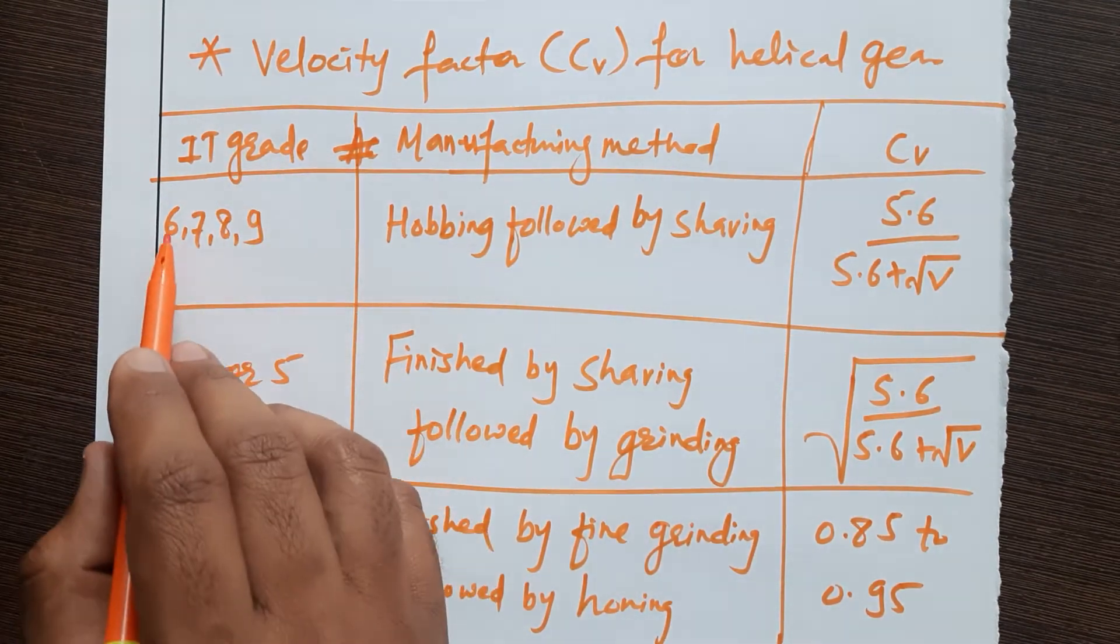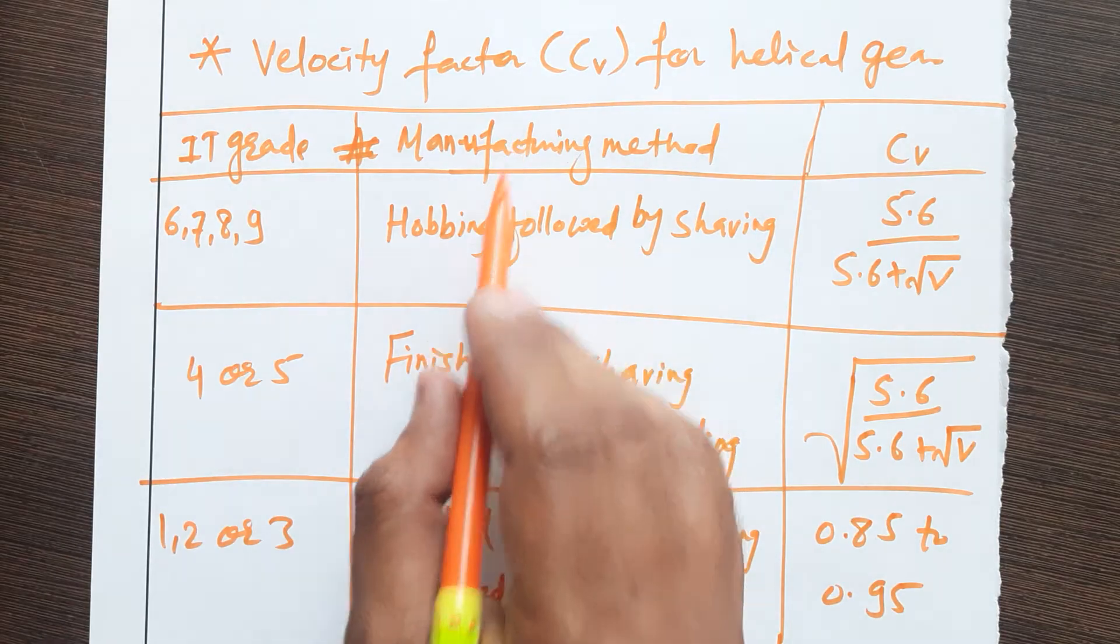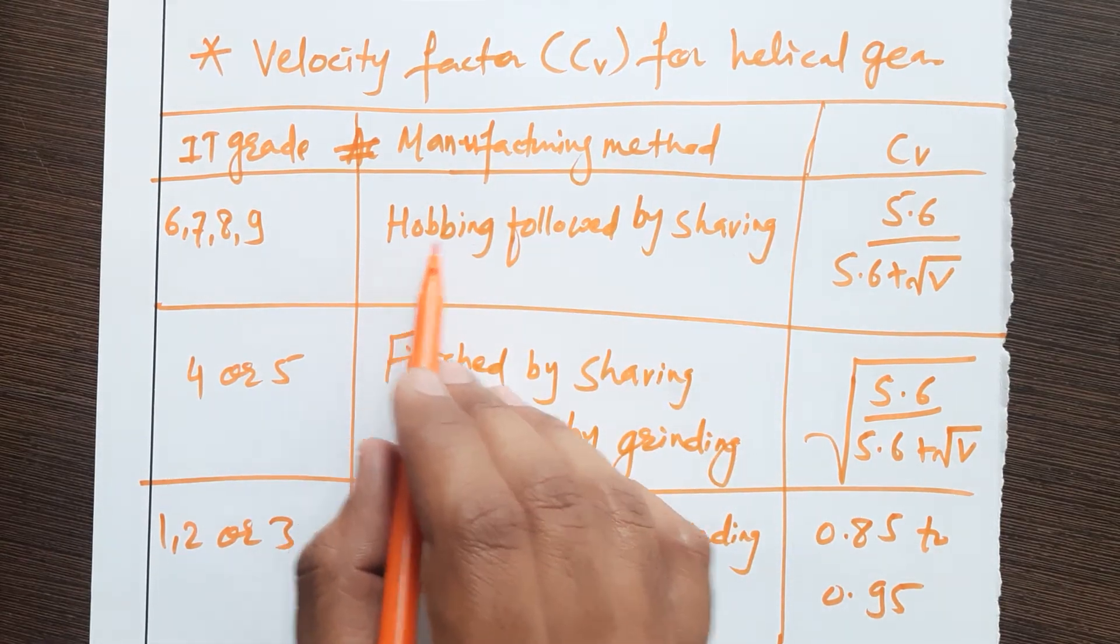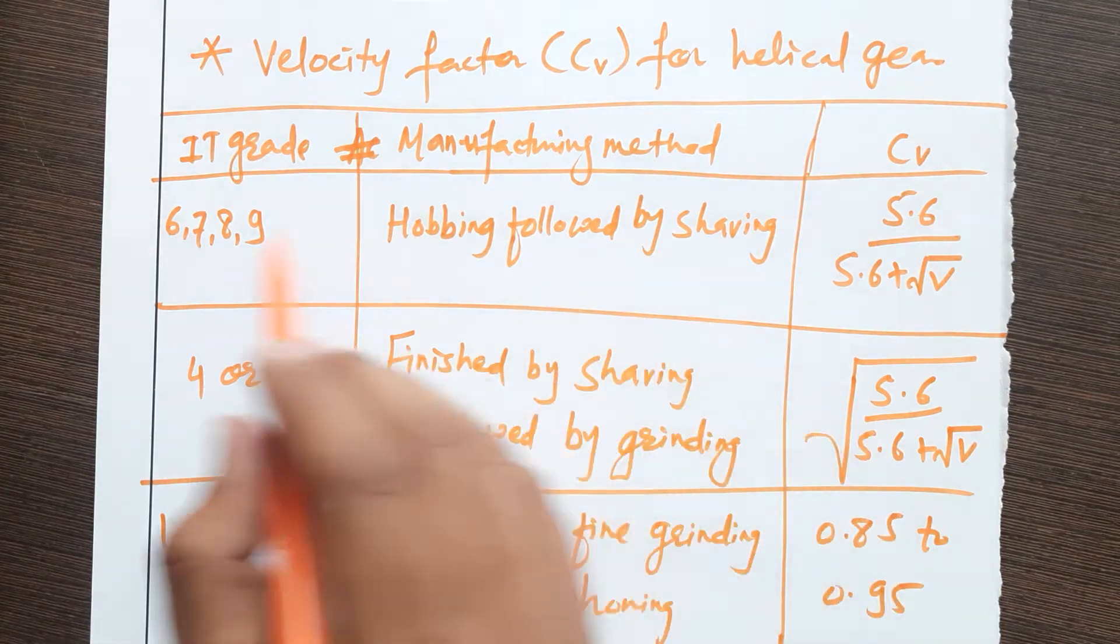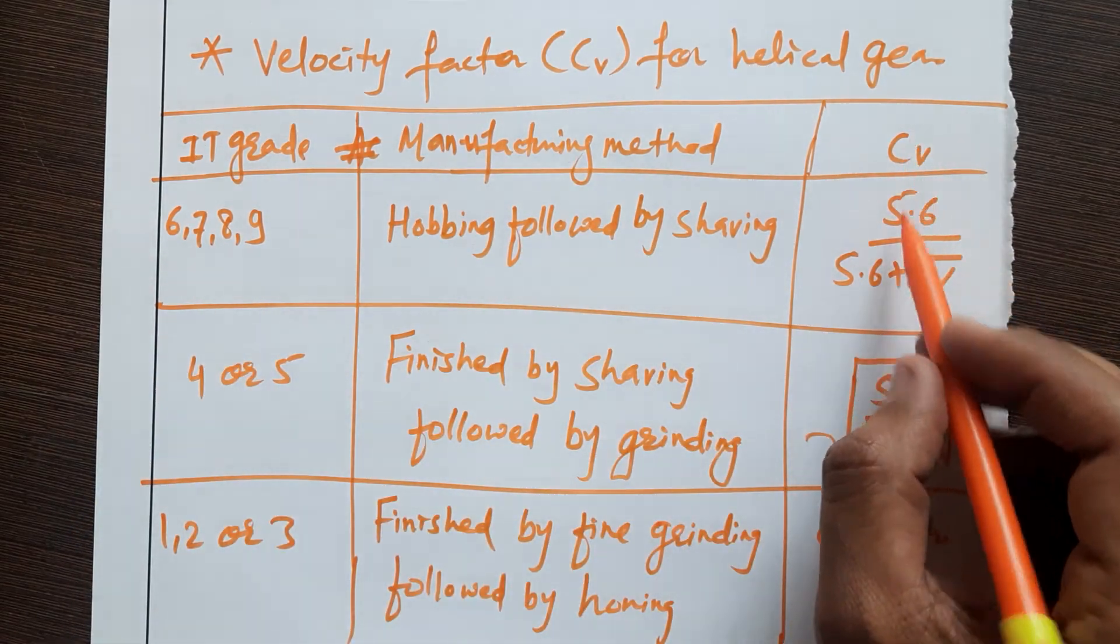Here, IT grade 6, 7, 8, and 9. The manufacturing method may be hobbing followed by shaving. For this manufacturing method and for this IT grade, you have to go for CV equals 5